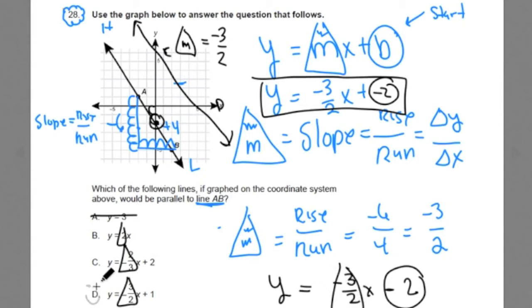Well, the answer here is D. D has the same slope. D is the answer. Some teachers say, well, I see that it has the same slope, negative 3 over 2, but what about this positive 1? What does that mean?